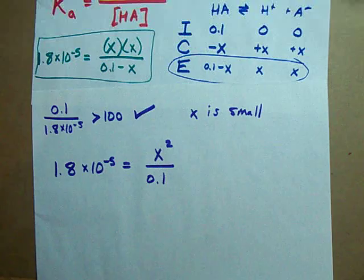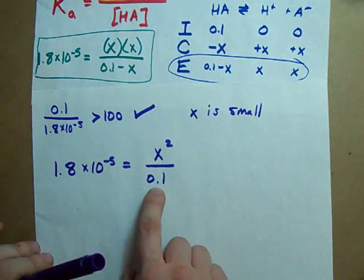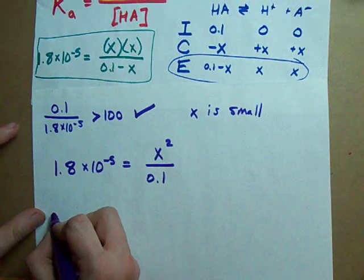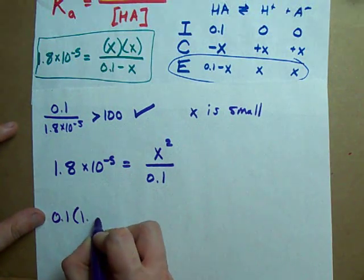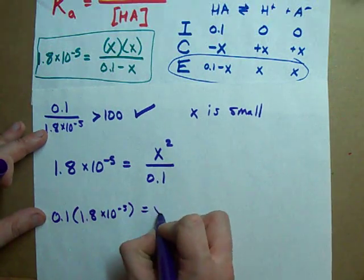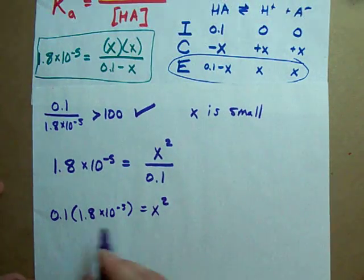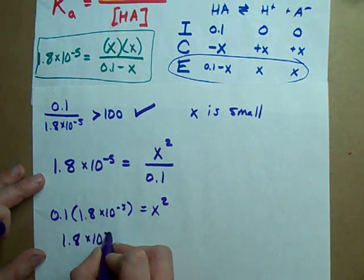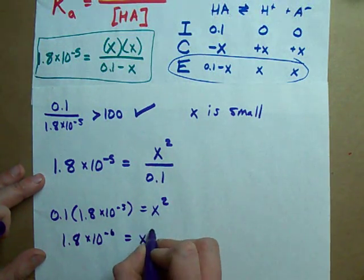This is a piece of cake to solve. All I have to do is move my 0.1 over. How do you undo division? Well, with multiplication. So I'm going to multiply the left-hand side of my equation by that 0.1.